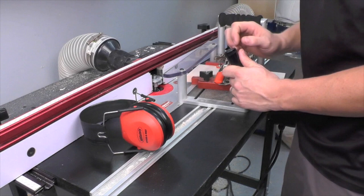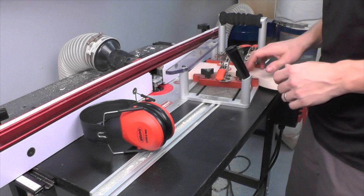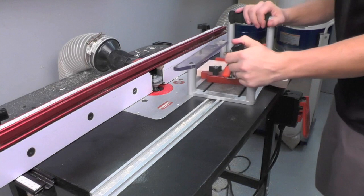I've gone ahead and set up the coping bit of my rail and style set in my router table and I've mounted my top rail in my coping sled, so I'm ready to go ahead and make the coping cuts in both the top rail and the bottom rail.